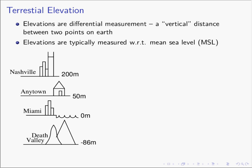For example, the elevation of Nashville, Tennessee is roughly 200 meters. What does that mean? If the elevation of Nashville is 200 meters, that means if you start at the ocean and progress to Nashville, you would have to travel vertically 200 meters up from the ocean to reach Nashville's elevation. So we say the elevation of Nashville is 200 meters with respect to the mean sea level.